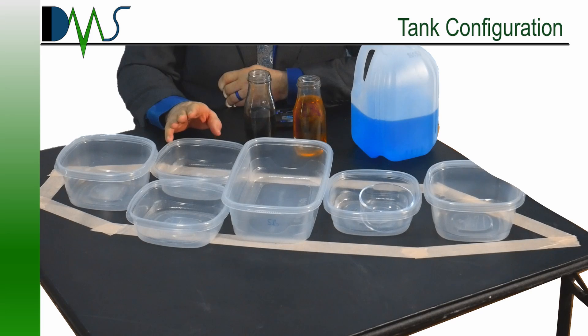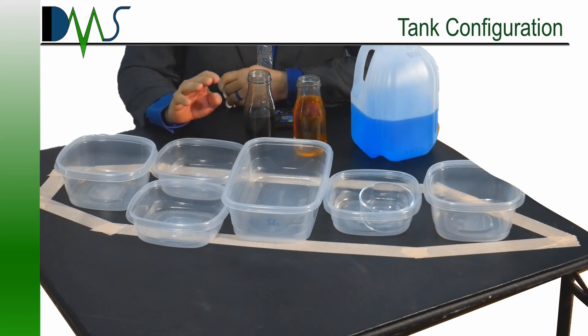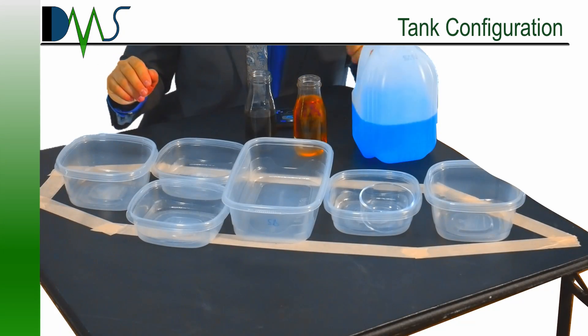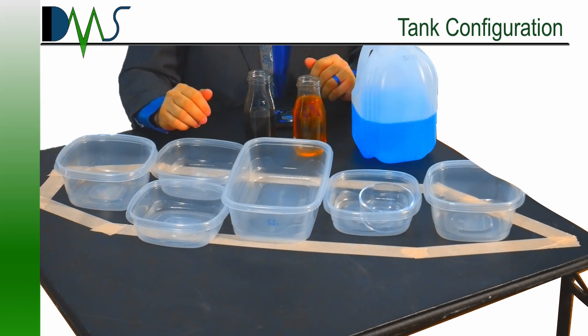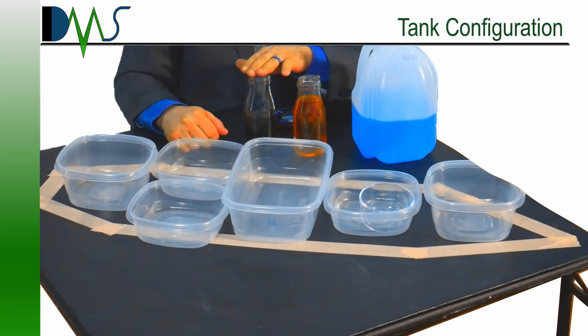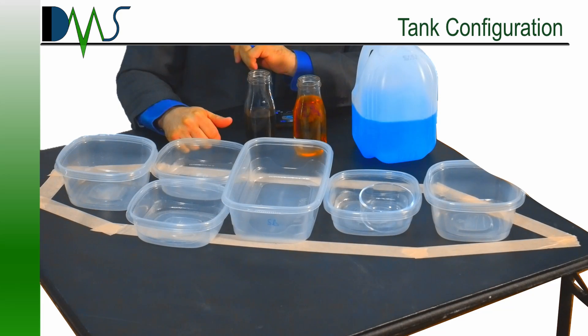Now I'm going to show you how I would distribute these liquids purely to minimize free surface moment. As I said before, vessel operations affect this in an entirely different manner. Now you can see here, we have three separate liquids that we need to find places for.